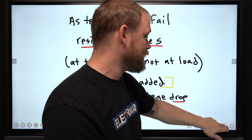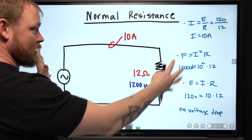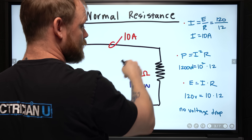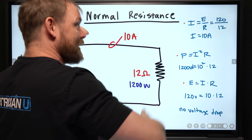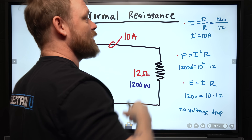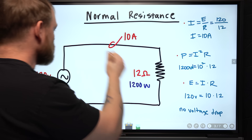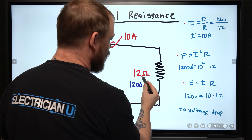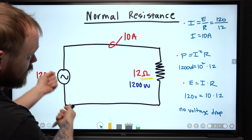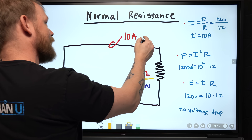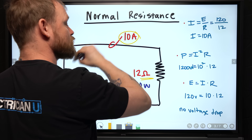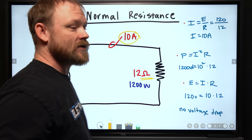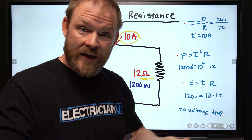Let's break into the examples. We're going to go from normal resistance, raise resistance at a termination, keep raising it, and see what happens. In this situation we have a 120-volt circuit with a 12-ohm resistor. When we bring 120 volts across 12 ohms, 10 amps naturally flow. The heat dissipation is 1200 watts — think of a 1200-watt space heater.